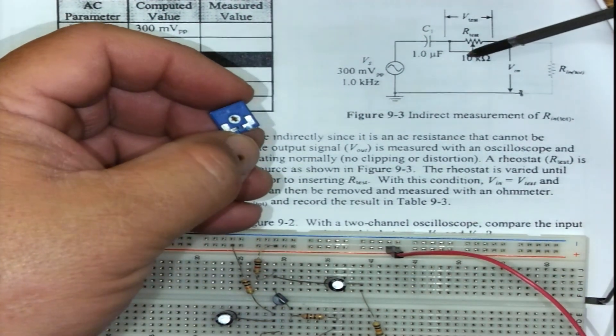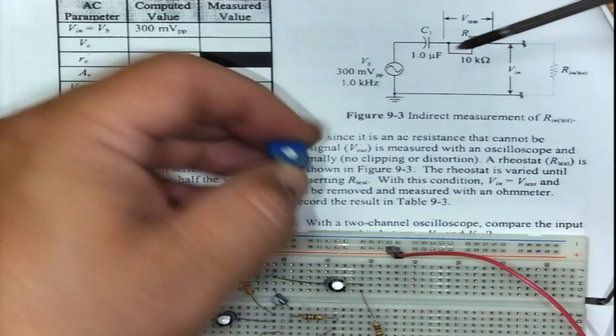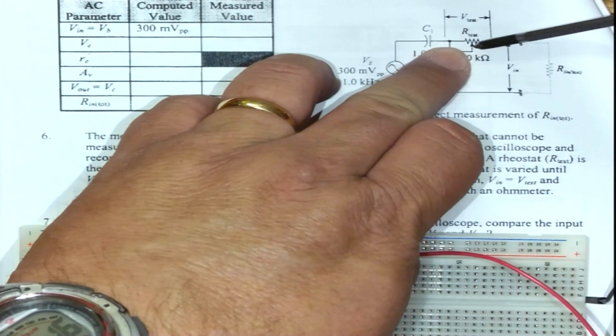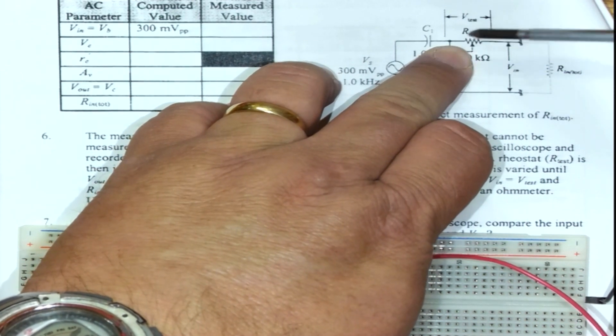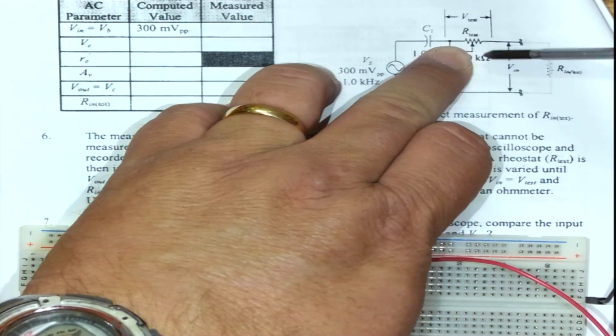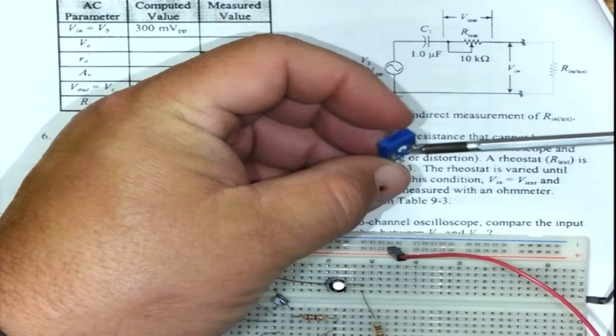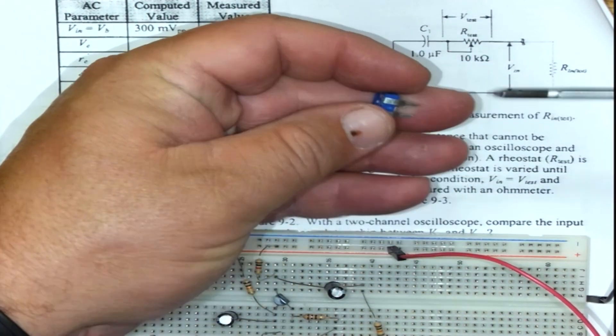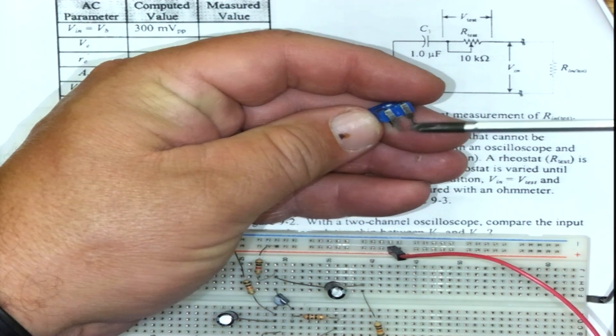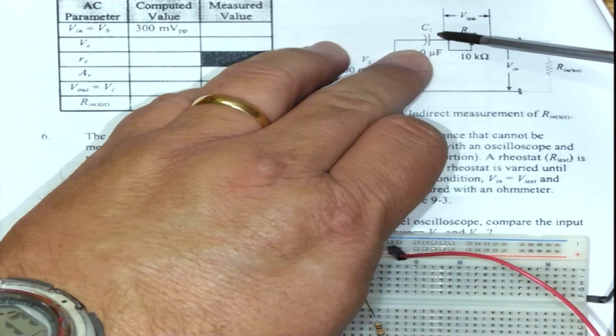It's a variable resistor. If you look at the symbol it has one, two, three legs. Don't worry about this little line sitting between this arrow and this side. If I look at the component there is one leg in the middle that is the arrow, one leg this side and one leg this side.